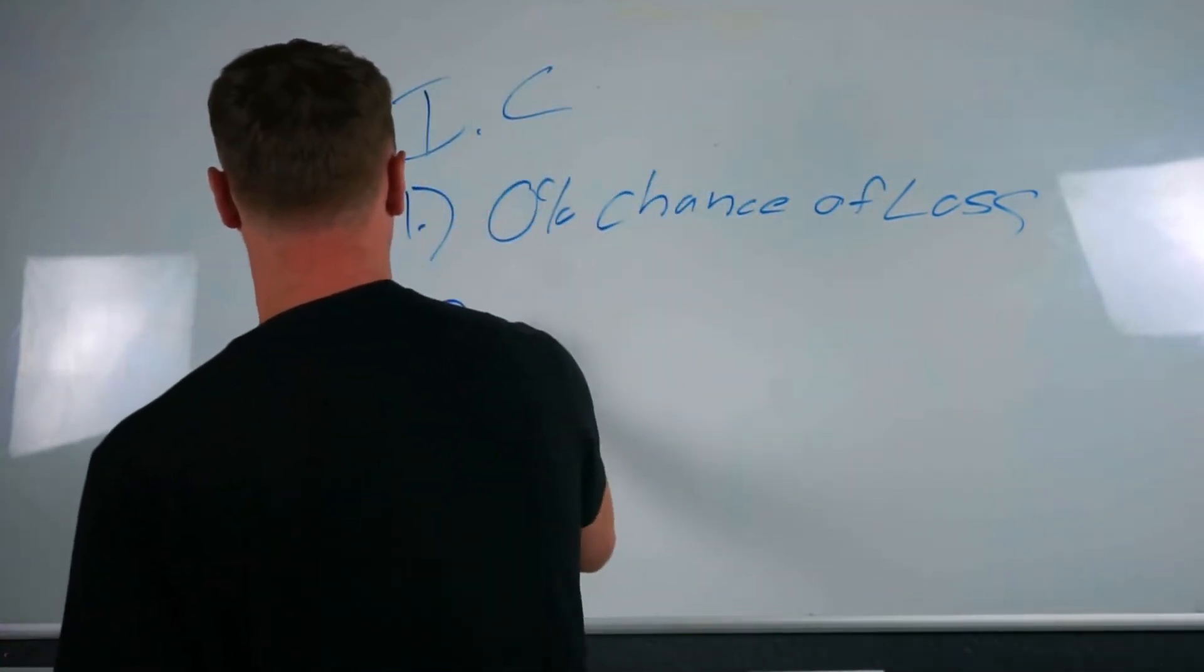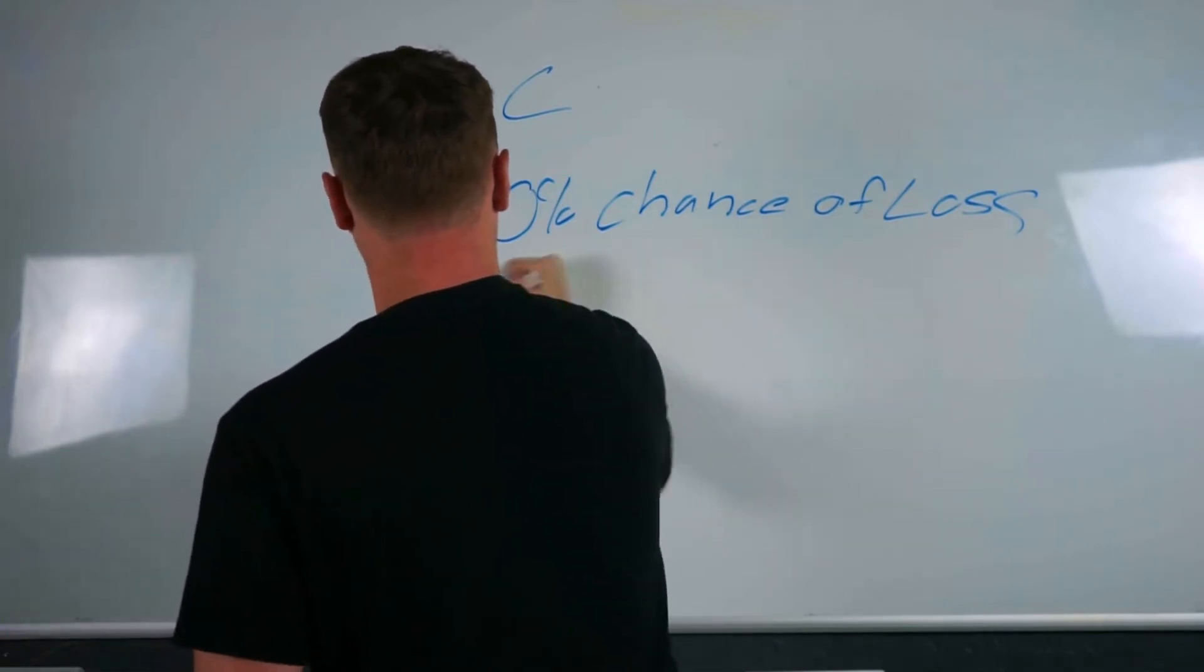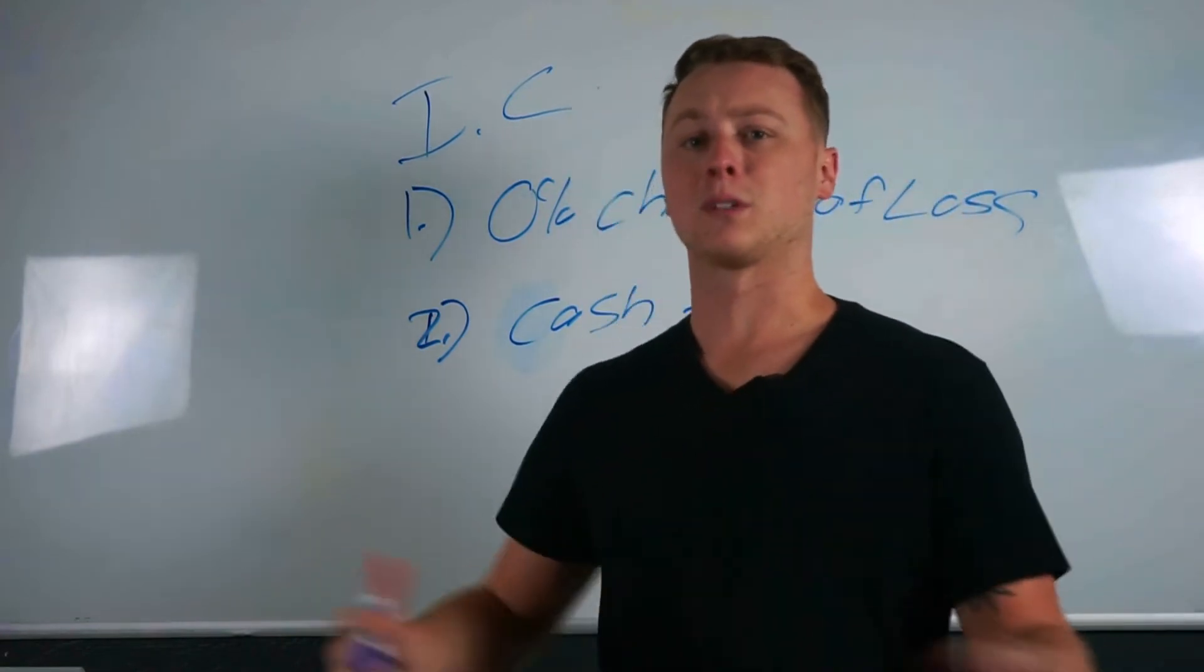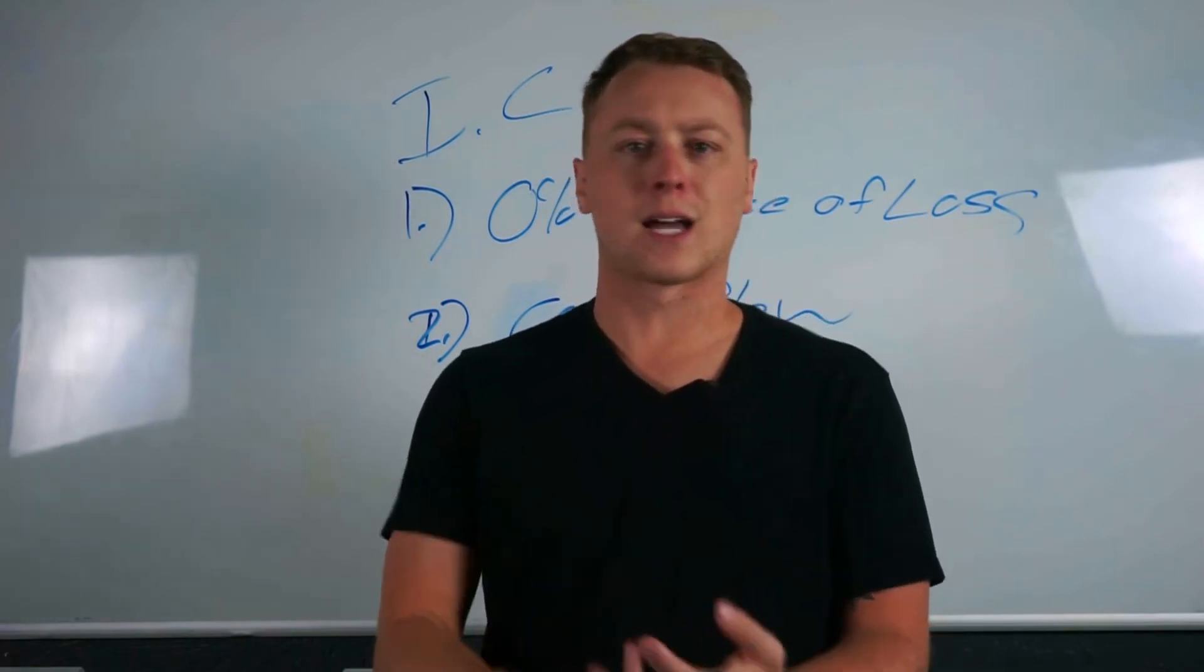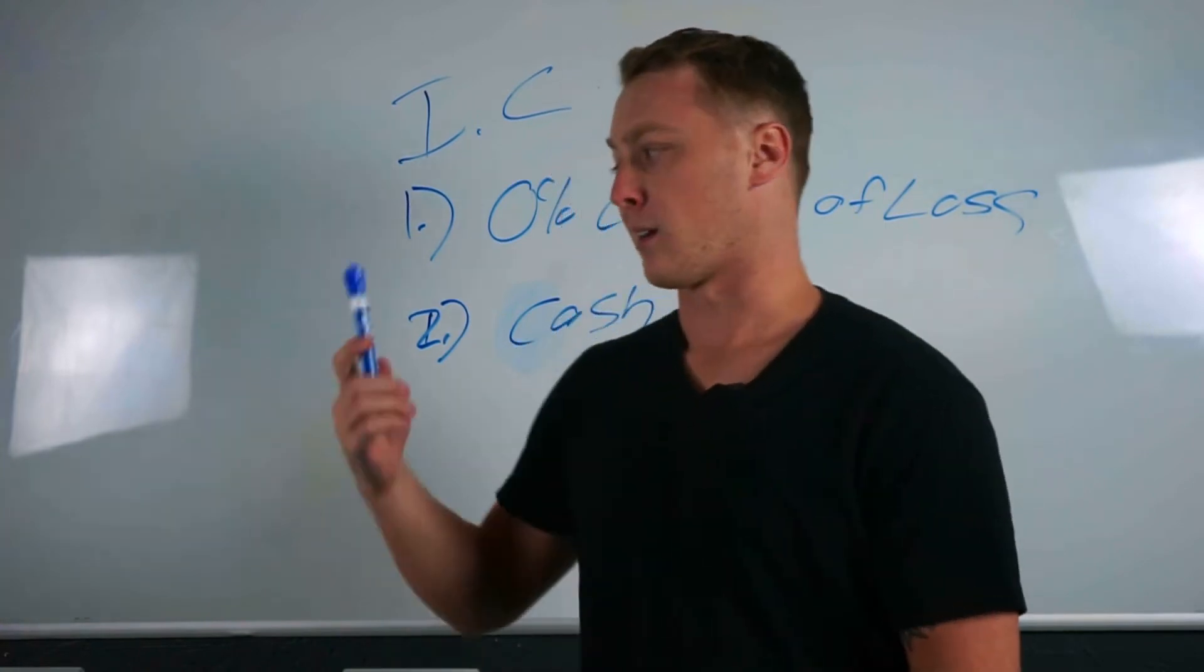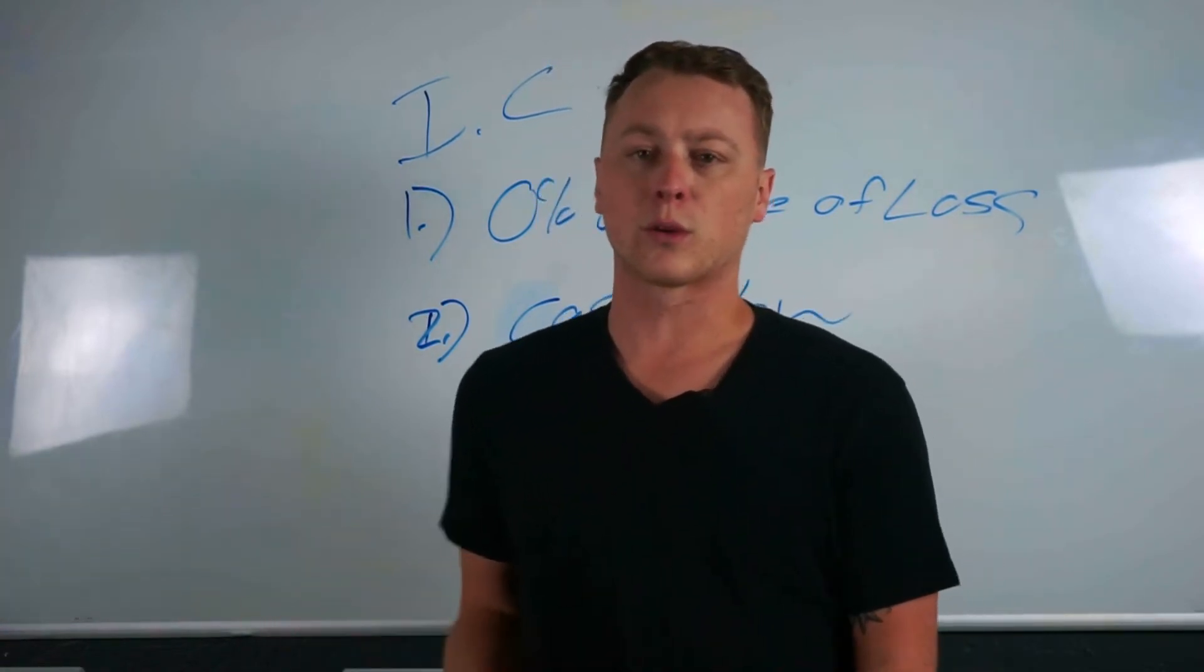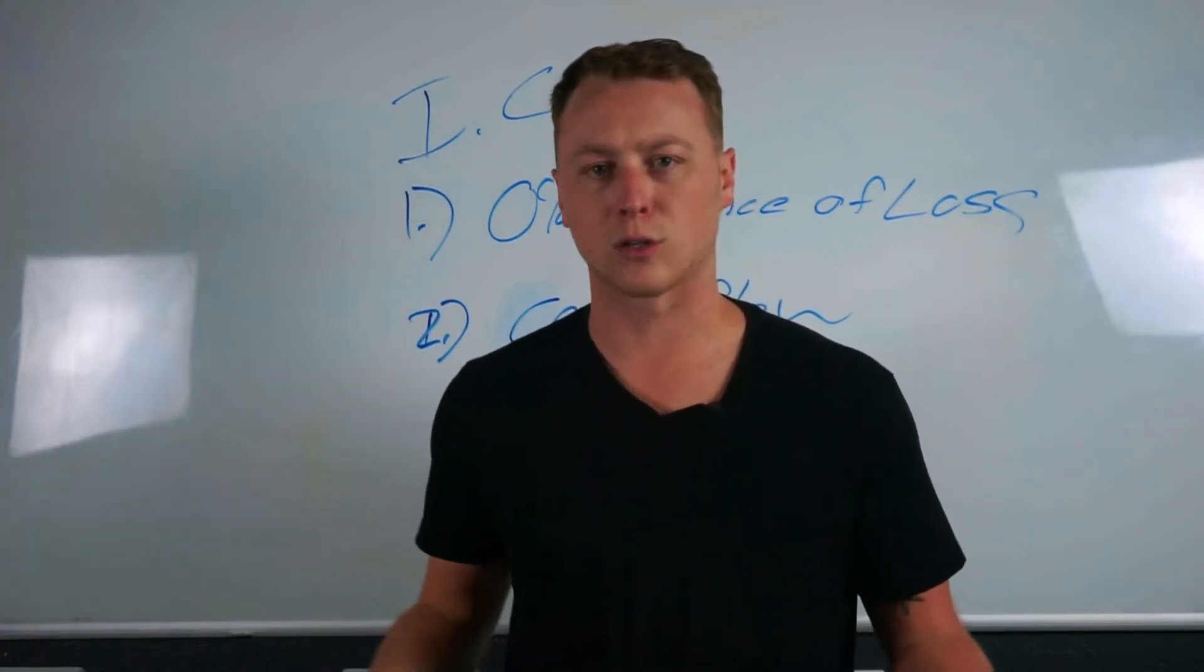Rule number two is it throws off cashflow. Rule number two, guys, rule number two wipes out probably everything you guys would put your money in. Bitcoin, there is no cashflow. The stock market, zero cashflow. I need checks coming to me every single month. A 401k, a Roth IRA, all that stuff, guys. Number two wipes out all that crap you would put in. The reason we want to invest into real estate is because it spits out cashflow. We get mailbox money. That's the goal.